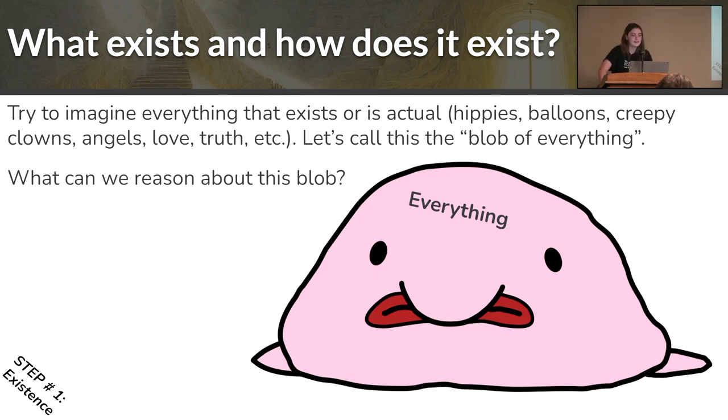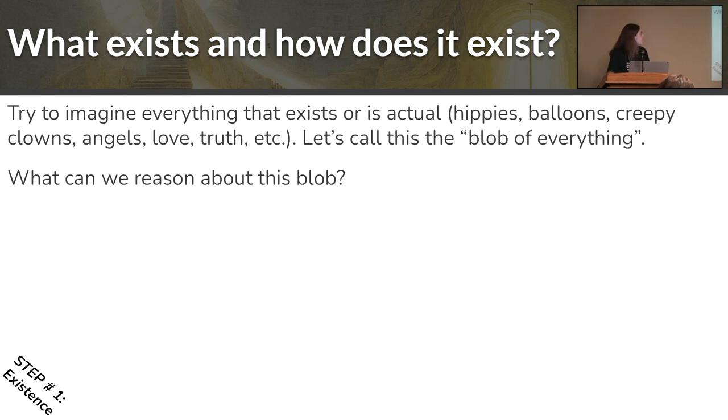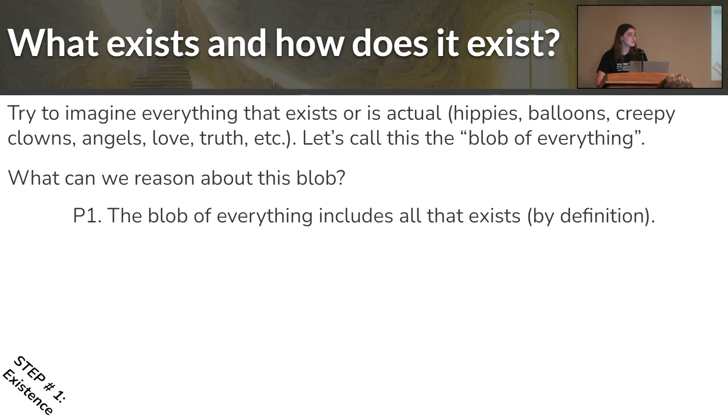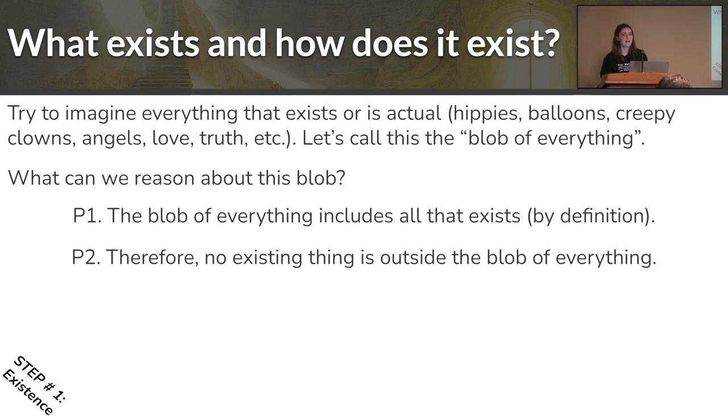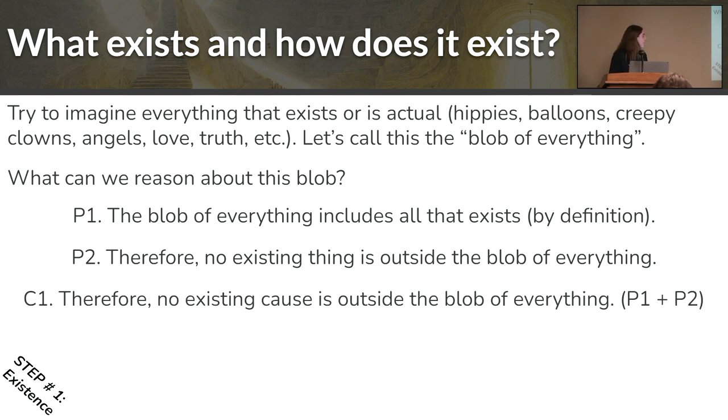Now, what can we reason about this blob? By definition, we know that the blob of everything includes all that exists. If you're mathematically inclined, it is the set of everything. That means there's no existing thing outside this blob of everything. And that means there's no existing cause outside the blob of everything, because we all know that something exists to actually cause other things. I have to exist before I can bring a drawing into life, for example.